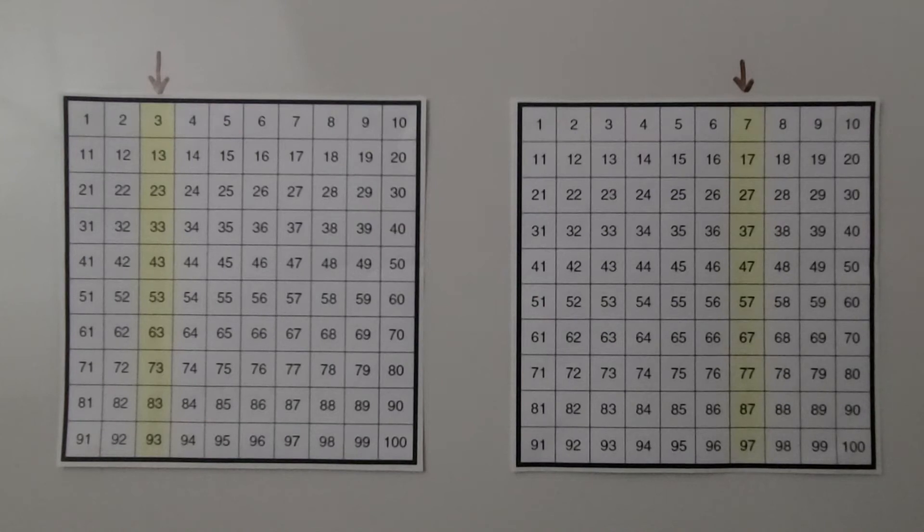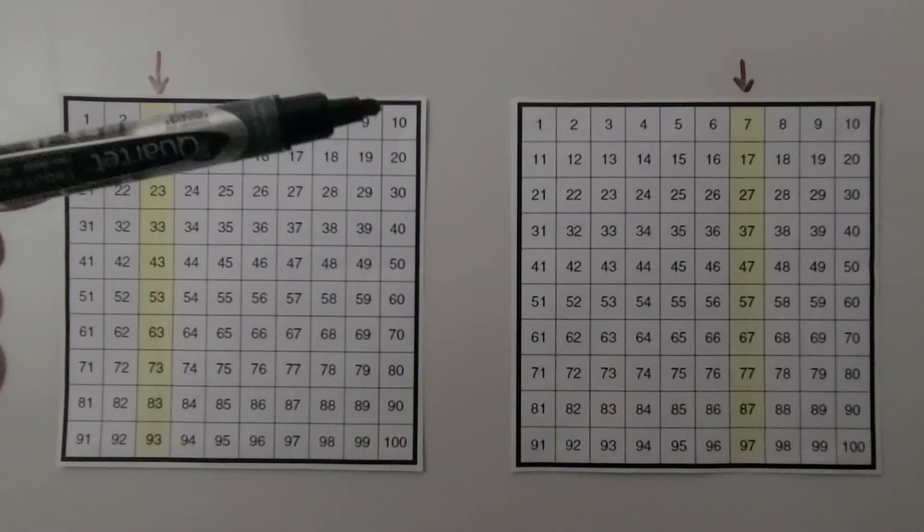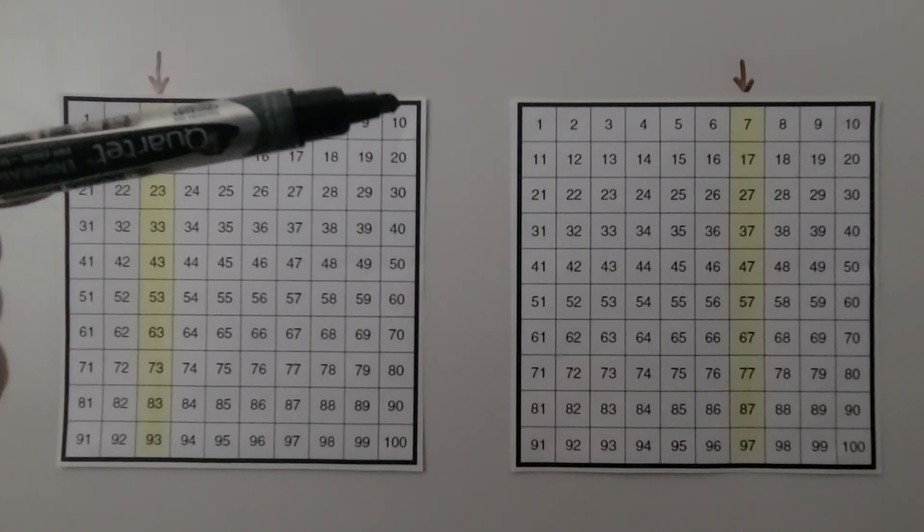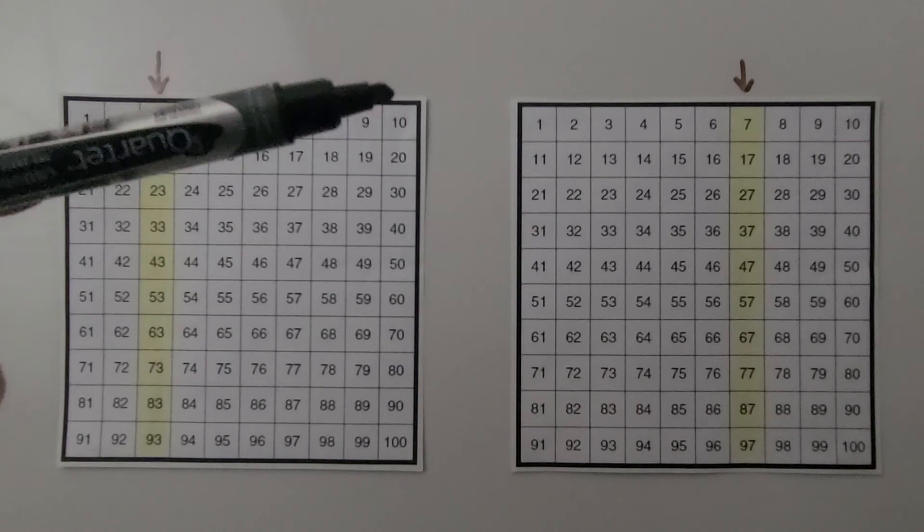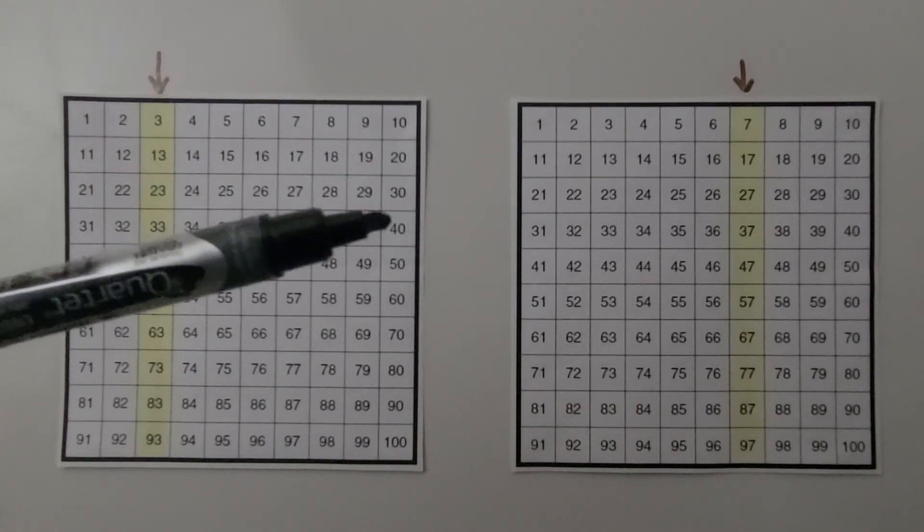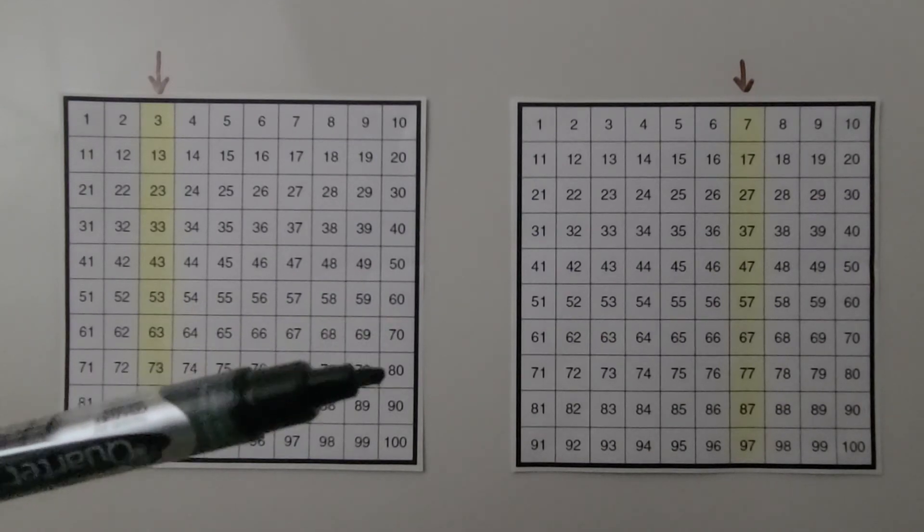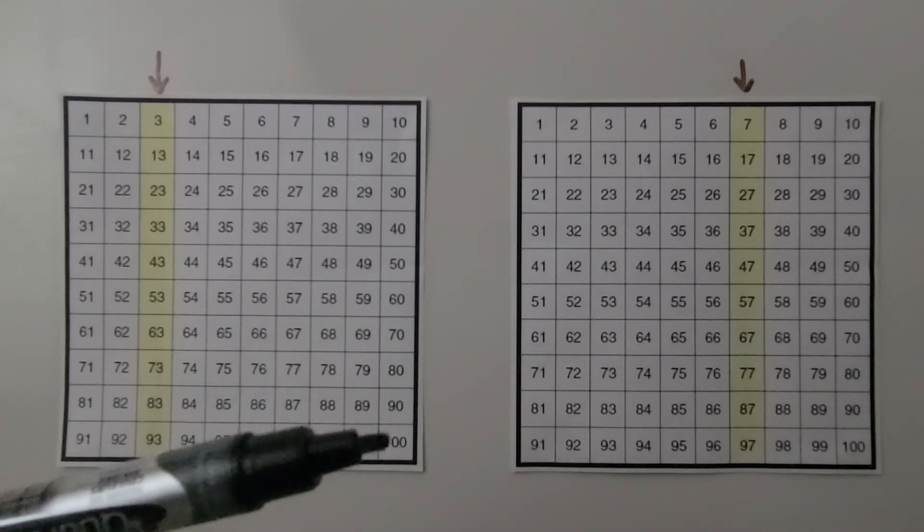So we can count by tens starting with any column. But if we count by tens from the 10 here, we're going to say 10, 20, 30, 40, 50, 60, 70, 80, 90, 100.